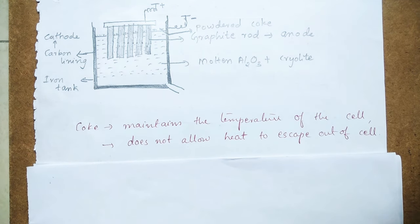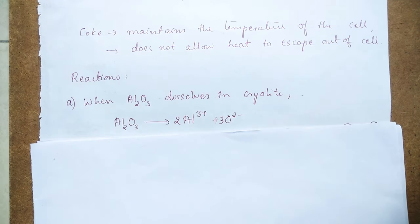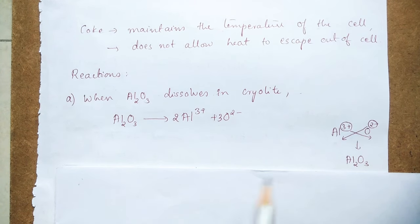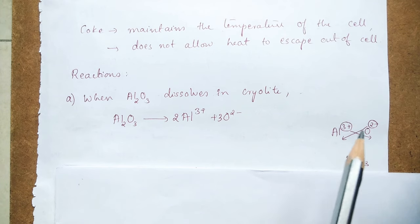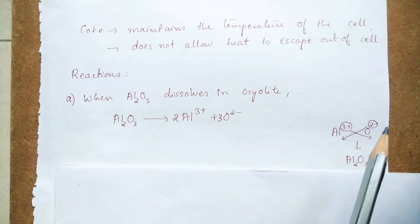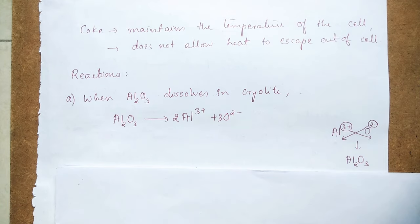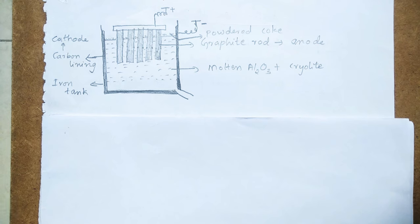When you pass electricity into the cell, certain reactions happen. The very first thing is that when aluminium oxide dissolves in cryolite, it breaks down into aluminium ion Al³⁺ and O²⁻, that is oxide ion. The charges can be known from the formula of the compound: Al₂O₃ is formed by the combination of Al³⁺ and O²⁻. So in the electrolyte, we have Al³⁺ and O²⁻ ions.